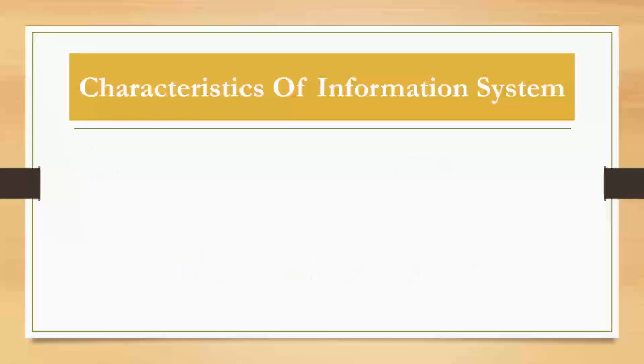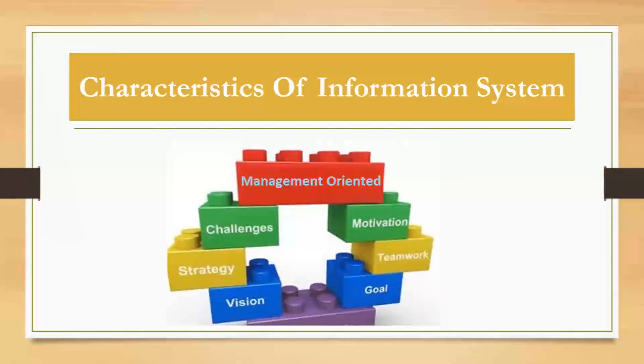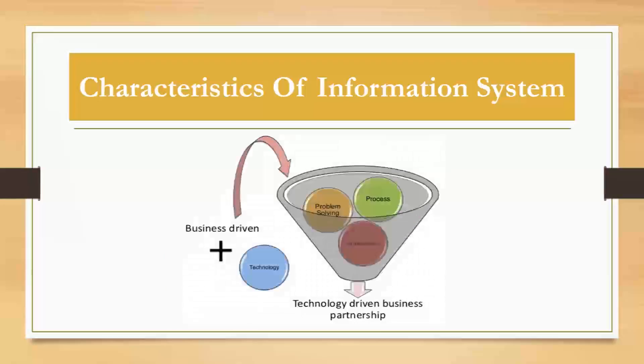Now let's move to characteristics of information systems. First is management oriented or directed, meaning the information system is for all in the organization. Second is business driven or justified, meaning the information system must be linked to the business plan of the organization.